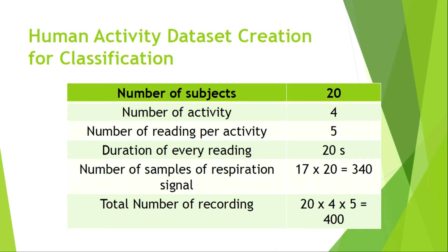For the human activity dataset creation, we used 20 subjects with 4 activities, 5 readings per activity, and each reading lasting 20 seconds. The number of samples per respiration signal is 17 frames per second (predefined by the radar) multiplied by 20 seconds, giving 240 samples. The total number of breathing recordings came to 400.